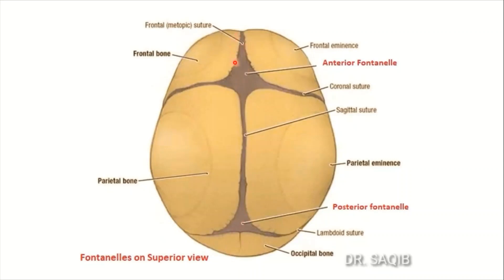The fontanel is a membranous structure that covers the brain where the bone has not yet ossified. There are certain specific functions. Two fontanels are found on the sagittal aspect — the anterior fontanel, where the coronal and sagittal sutures meet, and the posterior fontanel, where the lambdoid and sagittal sutures meet. Two more are found on the lateral aspect and will be discussed in norma lateralis.